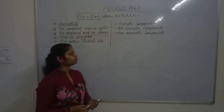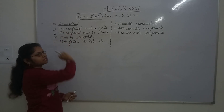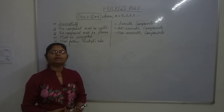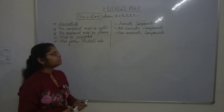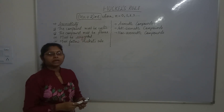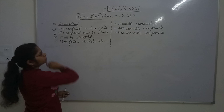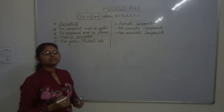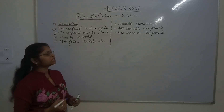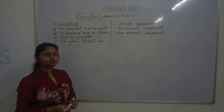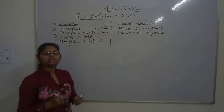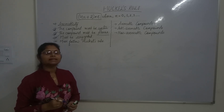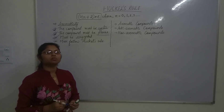Aromaticity is a property of sp2 hybridized planar rings in which pi orbitals are involved in delocalization of pi electrons. These compounds have four important criteria: first, the compound must be cyclic — all carbon atoms must be arranged in a circular ring; second, the compound must be planar — all carbons must be sp2 hybridized and lie in the same plane; third, the compound must be conjugated — there must be alternate single and double bonds in the structure.